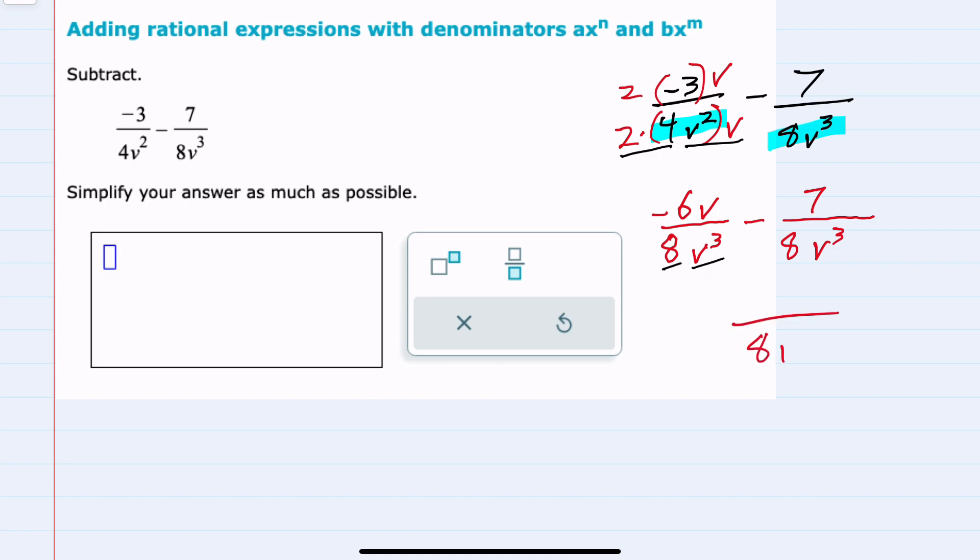And we would keep that denominator of 8v³. In the numerator, we would have our negative 6v minus 7. And since there is nothing left to simplify, this would be simplified as much as possible.